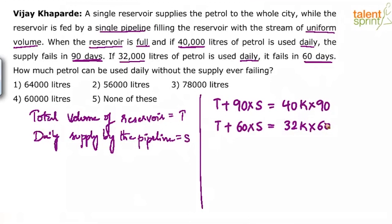The key point is: don't just compare 40,000 lasting 90 days versus 32,000 lasting only 60 days. It is a function of two things — the initial volume and also the pipeline supply. When it lasts only 60 days, the total amount received from the pipeline is also reduced. These two factors together determine the outcome.